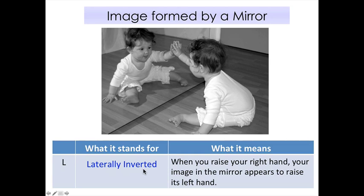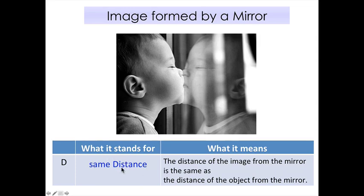The third characteristic is L — laterally inverted. If this baby puts her right hand onto the mirror, the image appears to be putting her left hand on the mirror. When you raise your right hand, your image in the mirror appears to raise the left. This is called laterally inverted. The fourth characteristic is same distance: if your object is 3 cm away from the mirror, your image will also be 3 cm from the mirror.